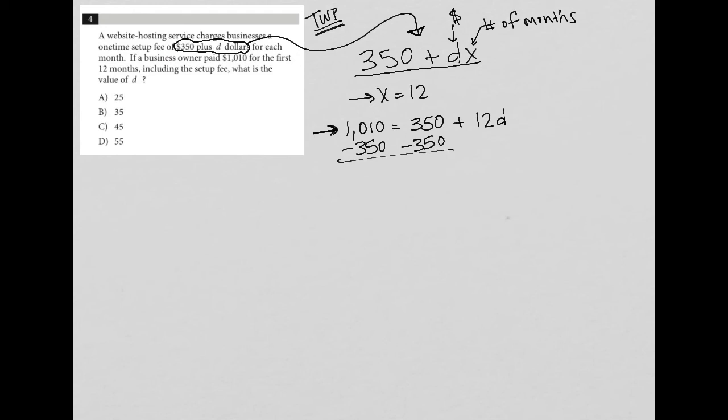I suggest that you use it even if you feel pretty confident with the math. I've seen too many students make small errors. So just go ahead and use your calculator. So $1,010 minus $350 in my calculator is $660. This is now gone. So $660 equals 12D.